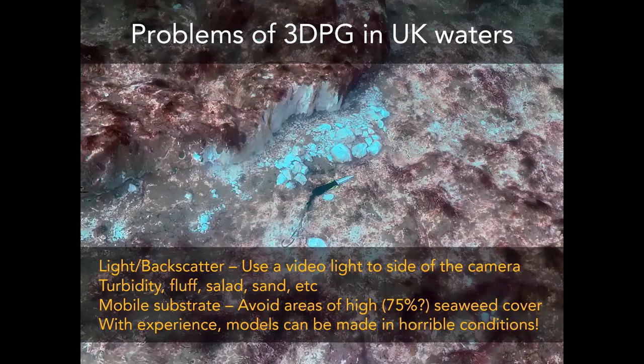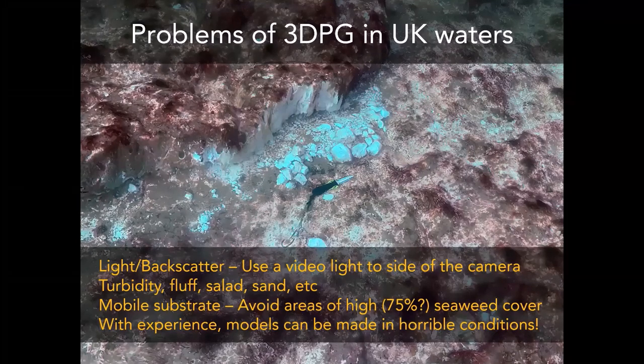You get to see what's underneath, but the process just cannot model seaweed. Similarly, if you've got lots of fish or divers moving about and getting in the way, they all get removed from the 3D model. Regarding turbidity and fluff and sand in the water — I have built 3D models in absolutely hideous conditions with visibility down to about 10 centimeters, so it is possible to do photogrammetry in awful conditions.